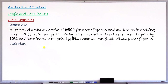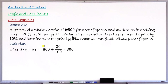For the solution, the cost price of the spoons is 800 Naira. The first selling price, which includes the 20% profit, is 800 plus 20% of 800. That is 800 plus 160, giving a market price of 960 Naira.